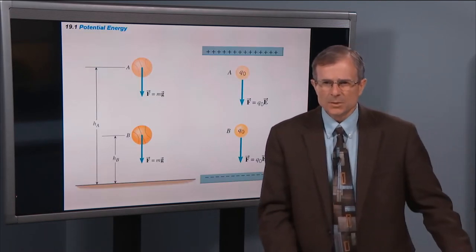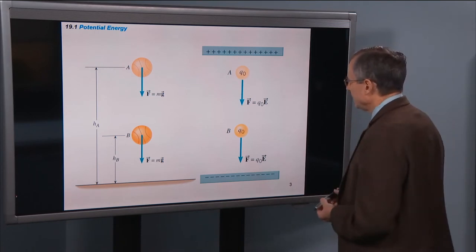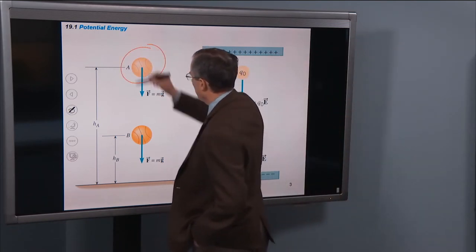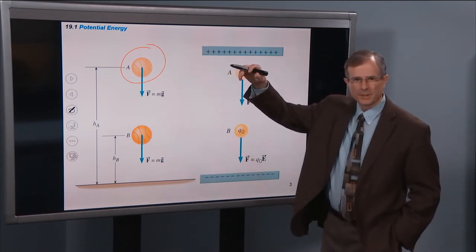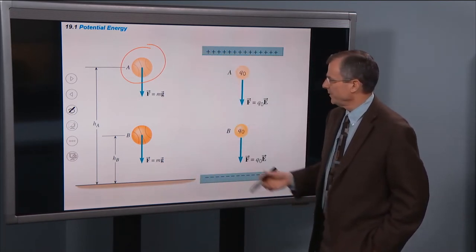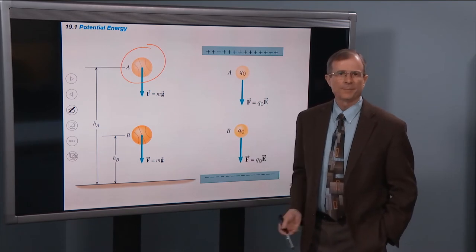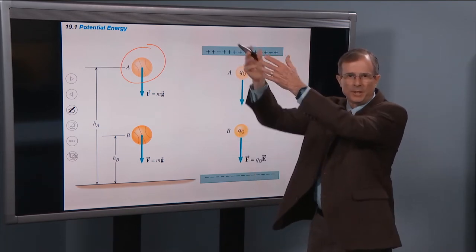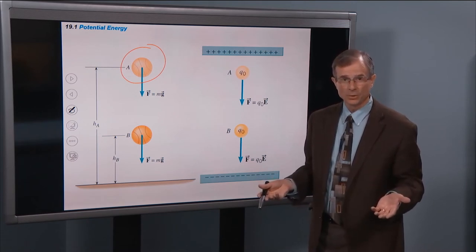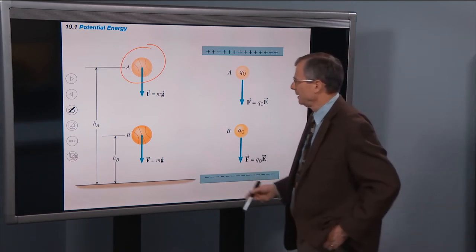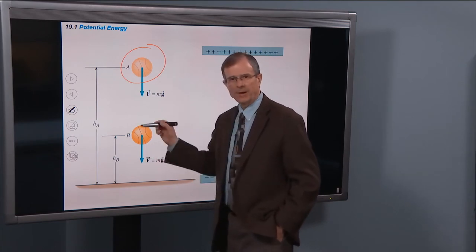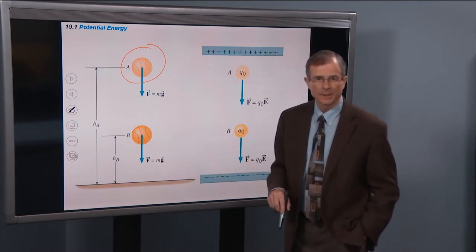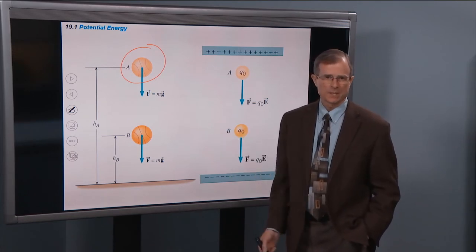Just like when you have a basketball that you're holding up high and releasing from a particular height, there's potential energy. The type of potential energy associated with the basketball being up is called gravitational potential energy. And then as it drops, that gravitational potential energy drops along with it — Mg times h.